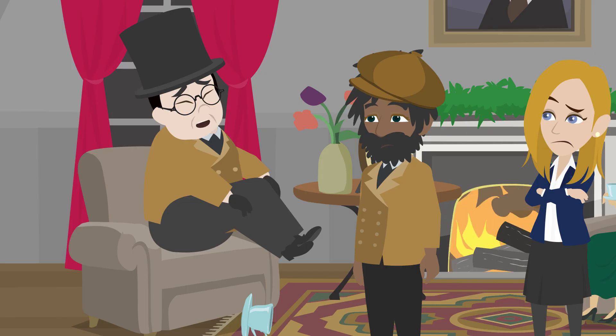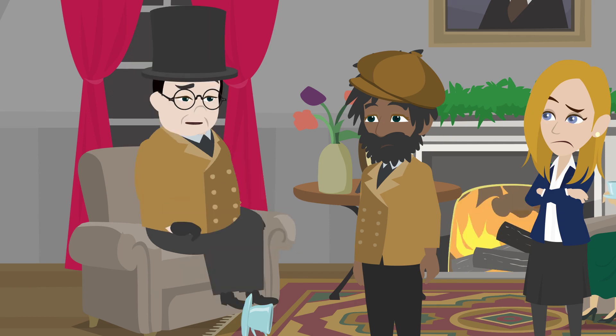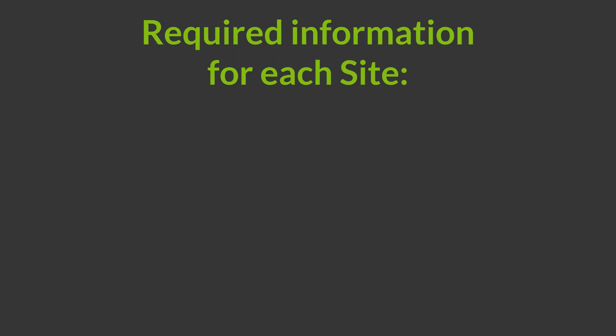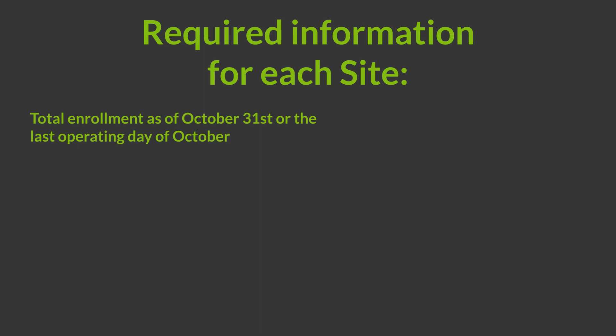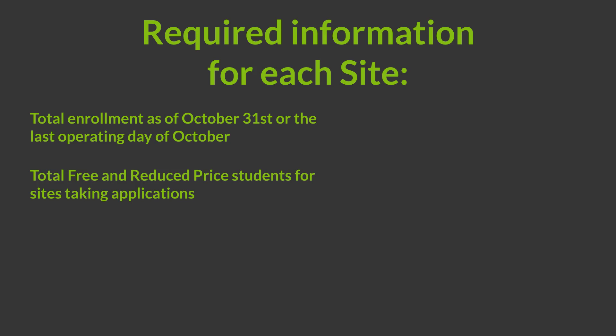Oh dear, I've dropped my teacup and saucer — how embarrassing. I suppose Lawrence will take care of the mess. Let me tell you what I know about October data. For each site, you need to calculate the total enrollment as of either October 31st or the last operating day of October. For example, if October 31st falls on a Saturday and you were open on that Friday for school, you will use October 30th instead. For any sites taking applications for free and reduced price benefits, you must also report the total free and reduced price students in addition to the total enrollment.